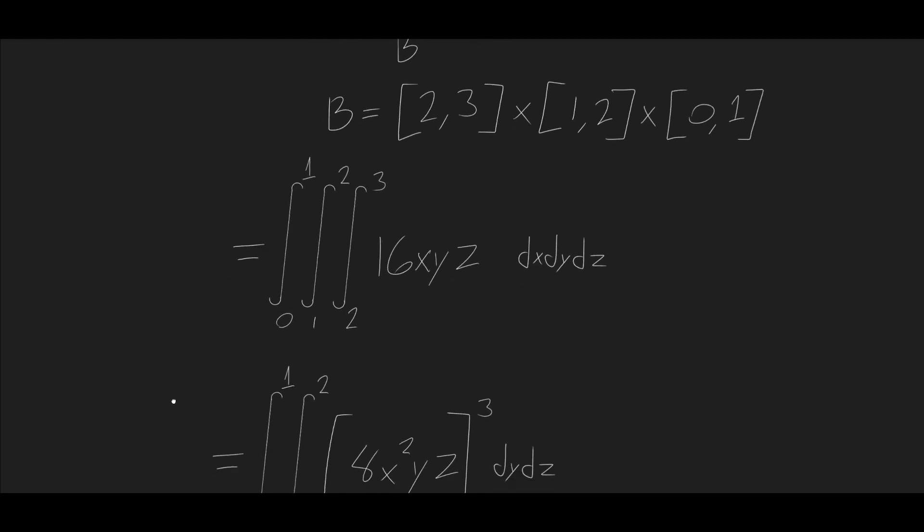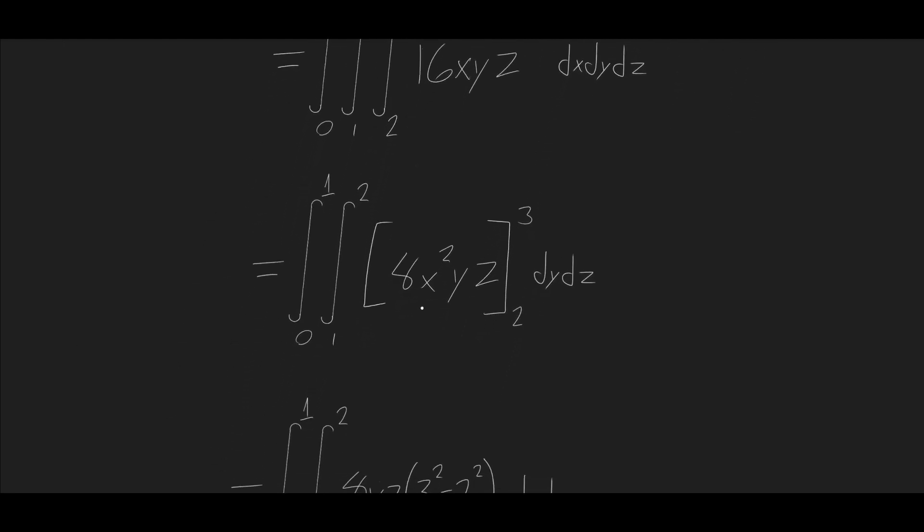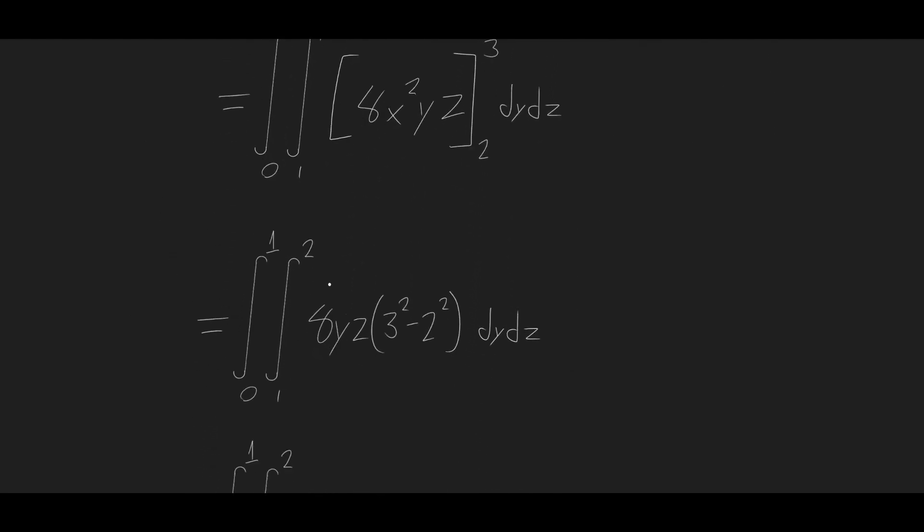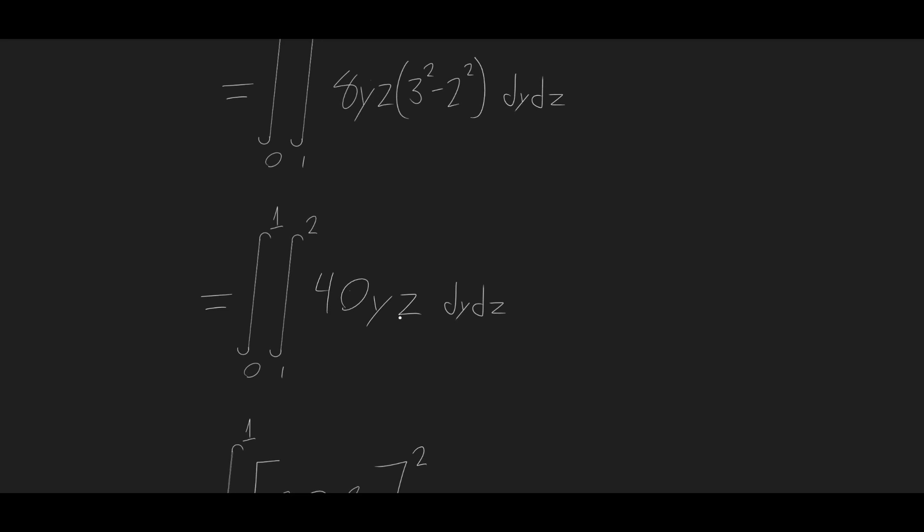And then we just solve this like we did the double integrals. We do the inside integral first, and this will give us 8x squared times yz. And we're evaluating this from 2 to 3. And then we get 8yz times 3 squared minus 2 squared, which gives us 40yz.